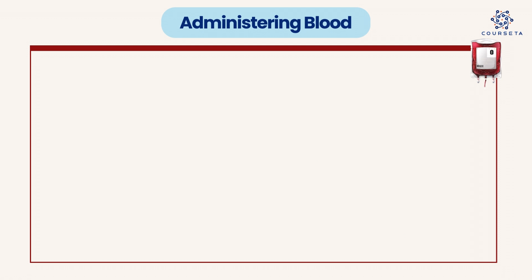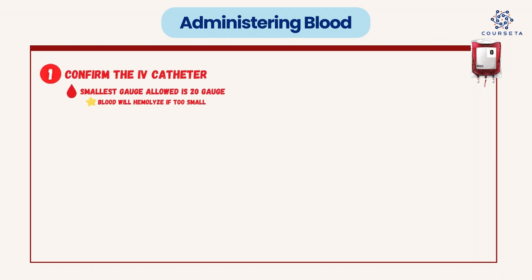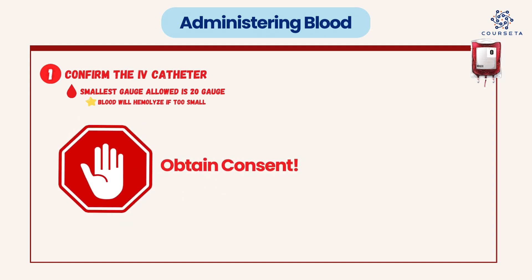Number one: confirm the IV catheter. When we have a unit of blood ordered, the first step is to confirm there is an IV catheter that's allowable. The smallest gauge allowed for blood to go through is a 20 gauge — if the IV catheter is too small, it will hemolyze the blood and won't provide any benefit for your patient. Before dealing with the blood, you also want to make sure you're confirming consent for blood administration.